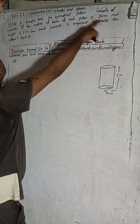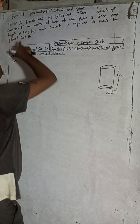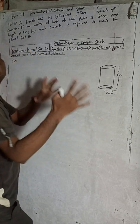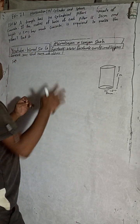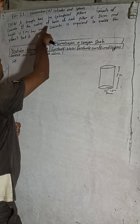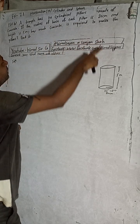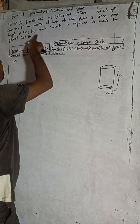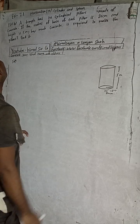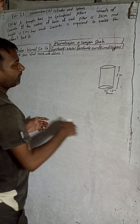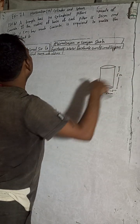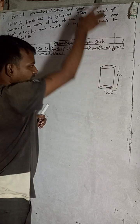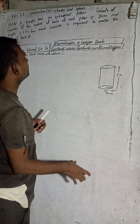Now let's start the solution. A temple has 14 cylindrical pillars made of concrete. The radius of the base of each pillar is 20 cm and the height is 5 metres. How much concrete is required to make the pillars?